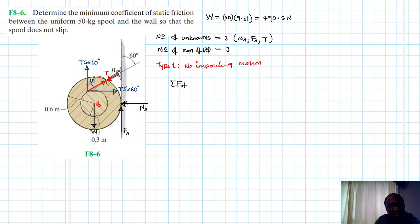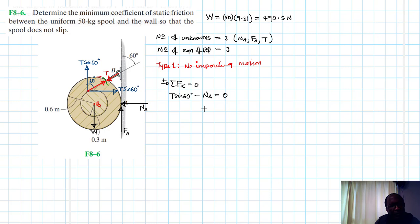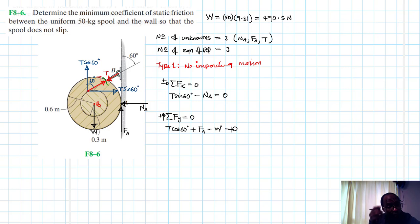Setting up the equations of equilibrium: summation of forces in x equals zero gives T sin 60 minus NA equals zero. Summation of forces in y equals zero gives T cos 60 plus FA minus W equals zero. Summation of moments about point B equals zero — since T is tangential to the radius, we get minus T times 0.3 plus FA times 0.6 equals zero.